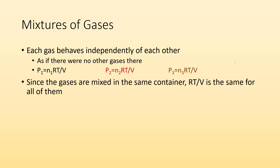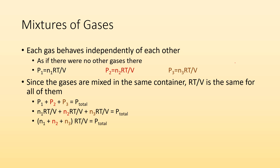Since the gases are all mixed in the same container, R is a constant, temperature is the same for all those gases, and volume is the same. So pressure one plus pressure two plus pressure three gives us the total pressure. Substituting in and factoring out RT over V, we end up with: moles of gas one plus moles of gas two plus moles of gas three, times RT over V, equals total pressure. So the total moles of all gases times RT over V equals the total pressure.